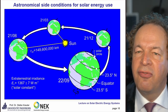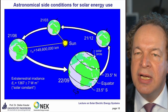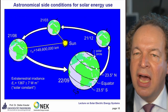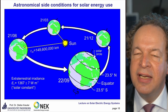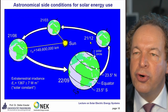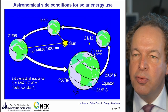Around the 21st of June, the northern surface is more illuminated by the sun — it's tilted more towards the sun, so we have summer on the northern hemisphere. The opposite occurs on the 21st of December, when the southern hemisphere is tilted more towards the sun.